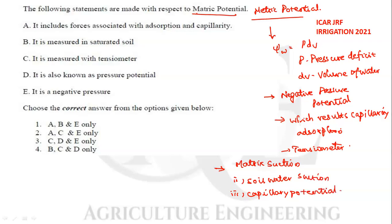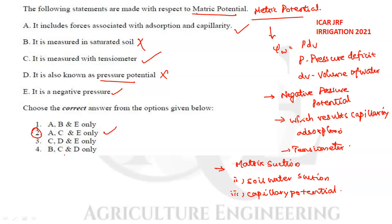Evaluating the statements: Statement A — it includes forces associated with adsorption and capillarity — is correct. Statement B — it is measured in saturated soil — is wrong; it is measured with a tensiometer. Statement C — it is also known as pressure potential — is wrong. Statement D — it is a negative pressure — is correct. So A, C, and E are correct; option 2 is the correct answer.